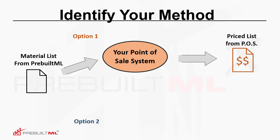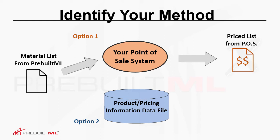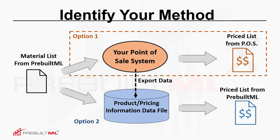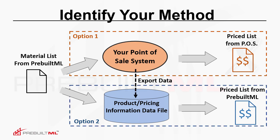Option two would be to take the pricing information from your point-of-sale system and export it to the product information database — a file that the pre-built ML software can interact with. Once you've done that, you can take your material list through the pricing information database and the pre-built ML software will price out the list for you. So option one would be to price your list of materials through your point-of-sale system, and option two would be using the pre-built ML software to price out your material list.